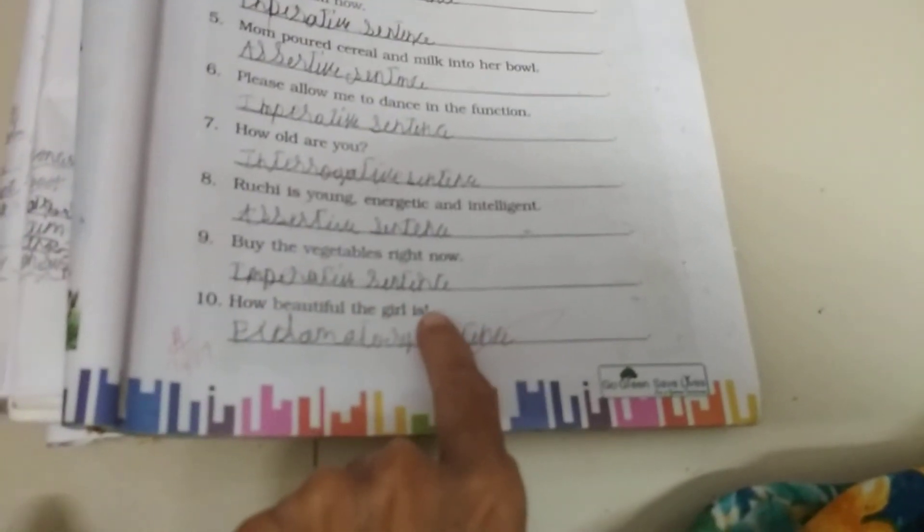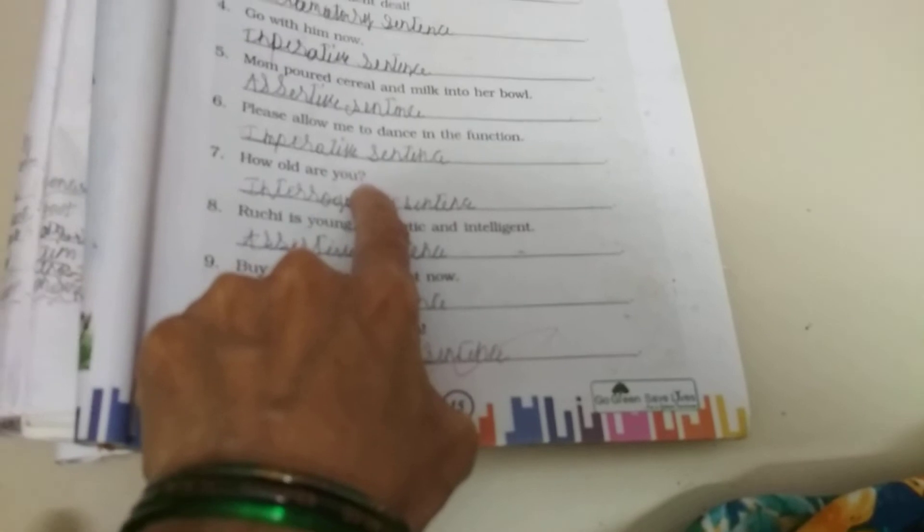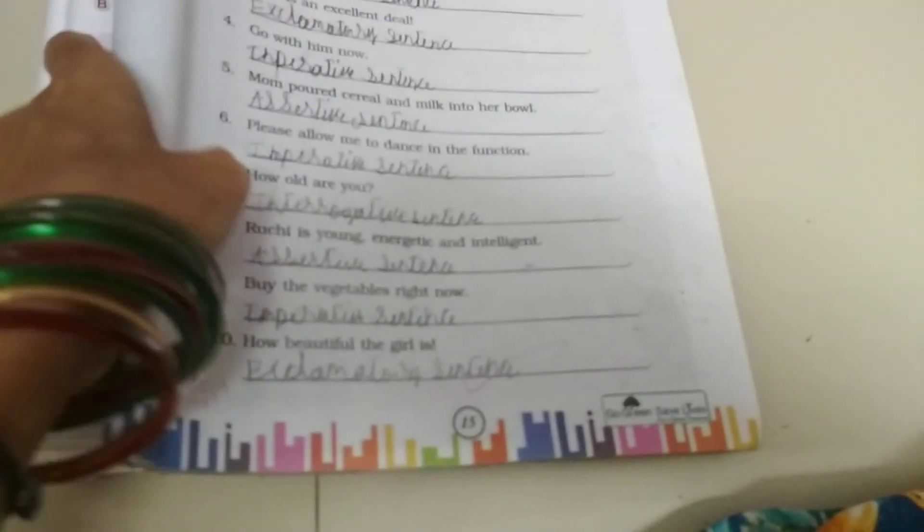In exclamatory sentence, we get exclamation mark. And interrogative sentence, we get question mark. So, let me tell you the other kinds of sentences.